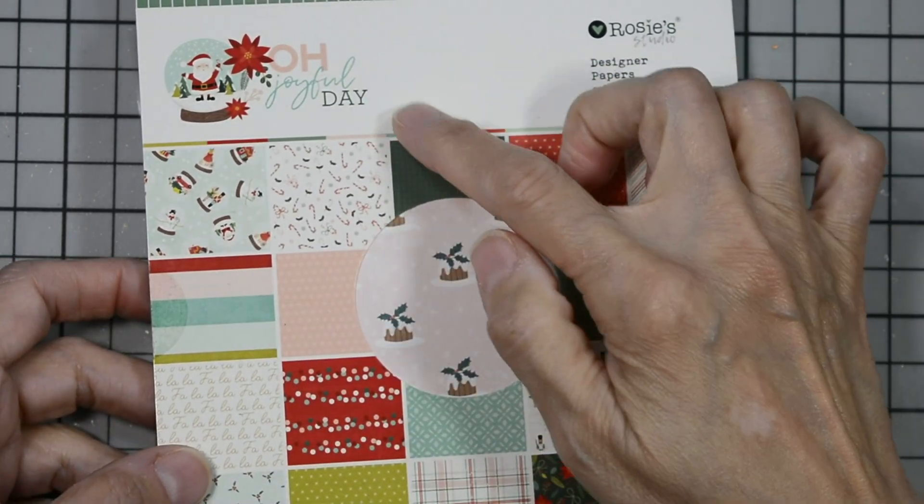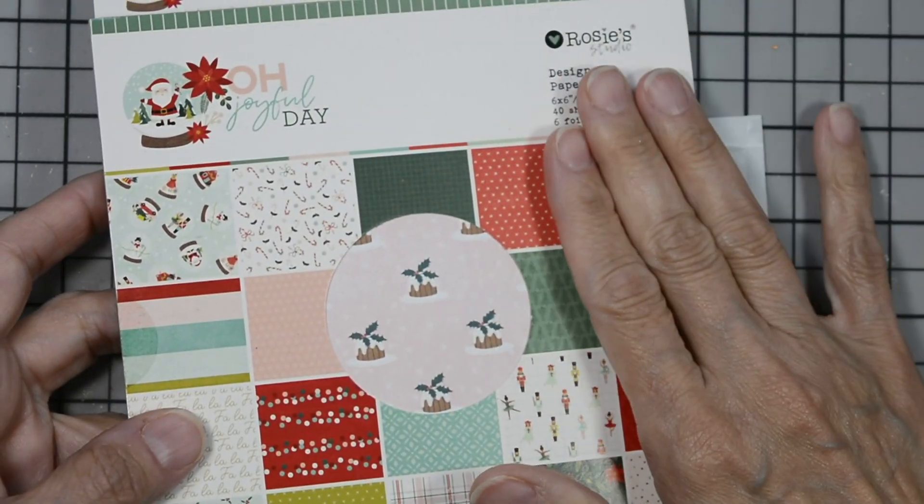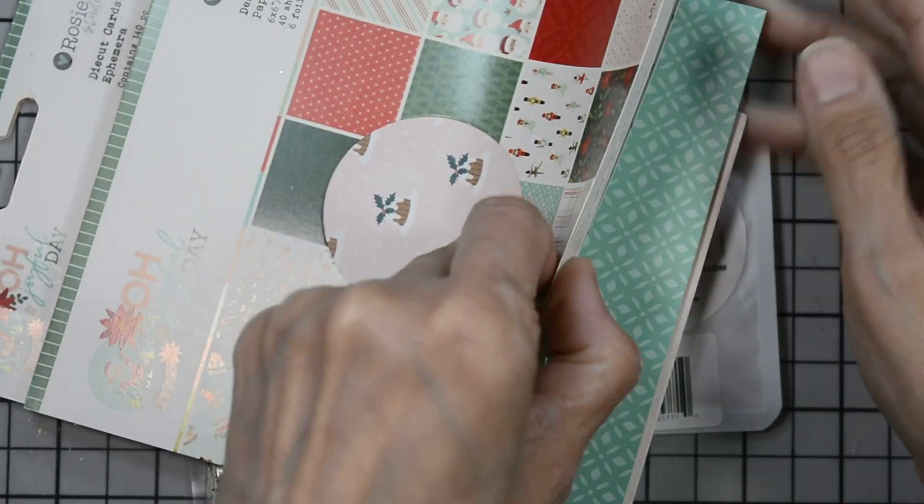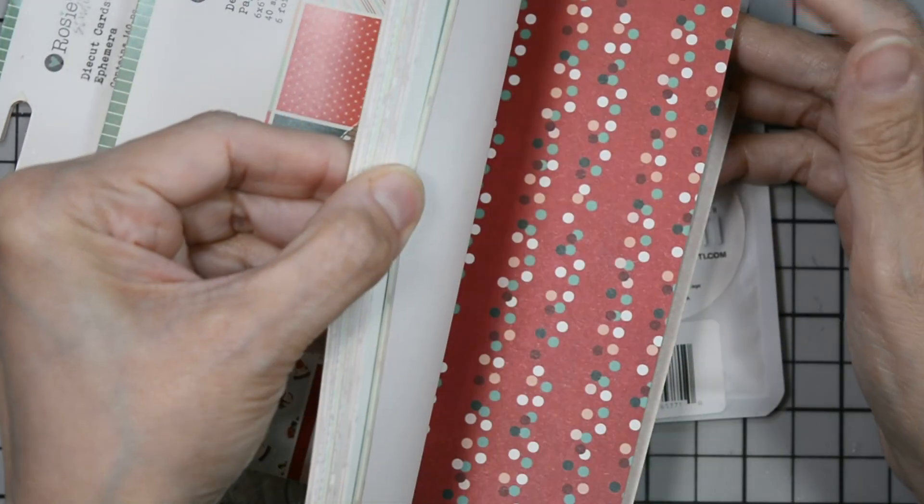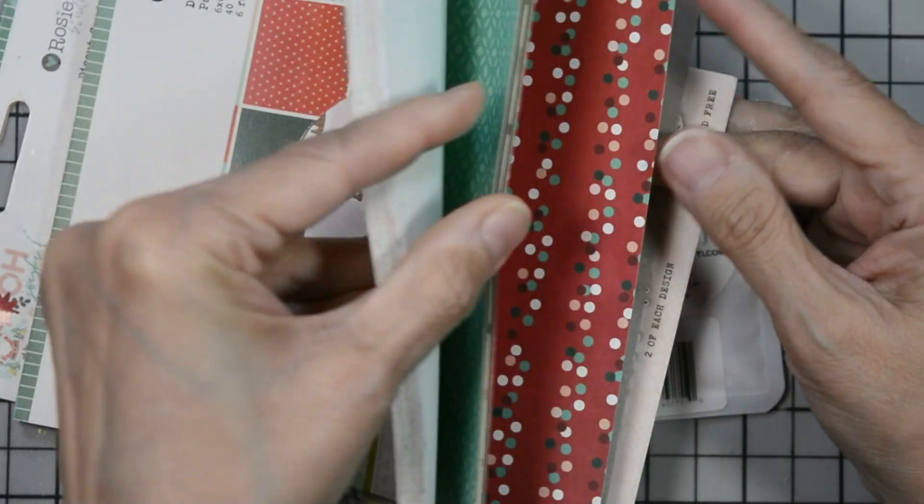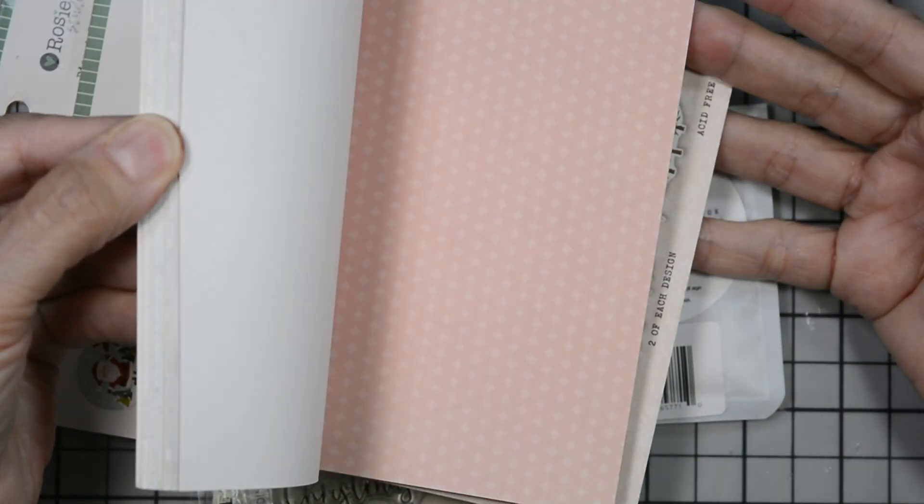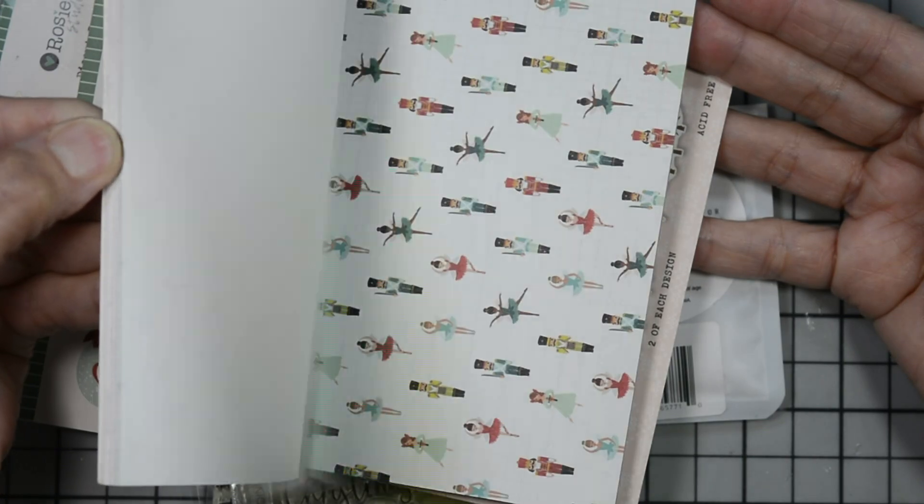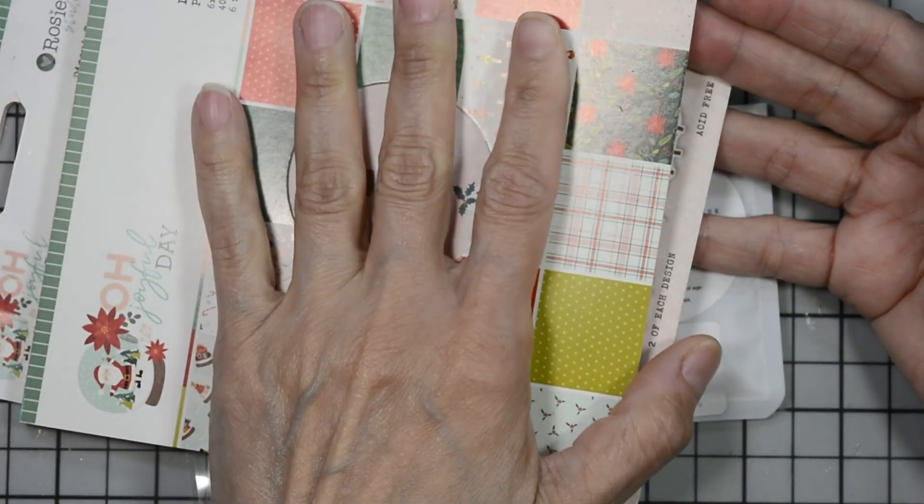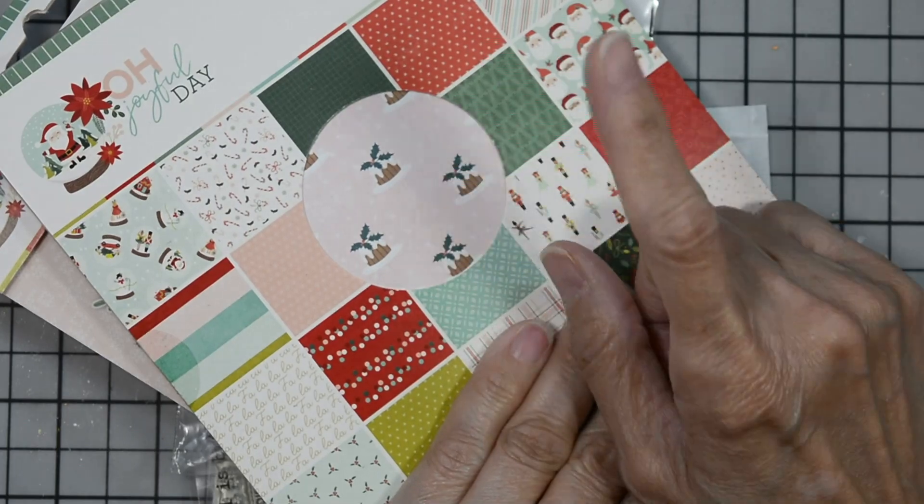Let's quickly go over the items I used to create this card. I'm using the Oh Joyful Day 6x6 pad and I'm going to give you a quick thumb through. I've gone over this really thoroughly in previous videos and they're part of the playlist labeled Rosie Studios. So here's a quick thumb through. I'm going to be using this paper here.